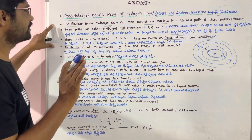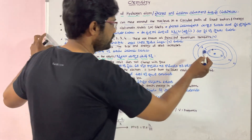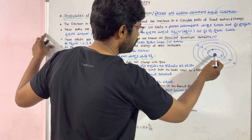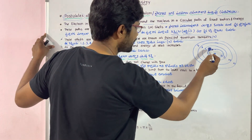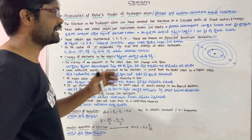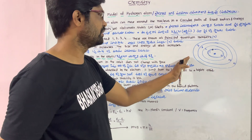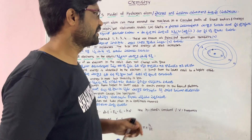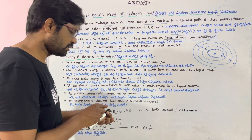Now, an important point is about Rutherford's model. What is the problem with Rutherford's model? Rutherford said the nucleus should attract the electron, meaning the electron would spiral into the nucleus due to continuous energy loss.